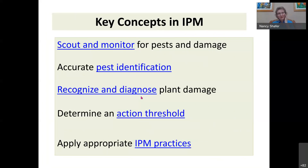The key concepts in IPM are to scout and monitor. Picture yourself in your garden early in the morning or late in the evening — walk around, look for pests, look for damage, and make note of it. If you find something, be able to identify it — take a picture or capture it. Next, recognize and diagnose the damage and determine whether it's bad enough to act on or whether to check back in a couple of days.